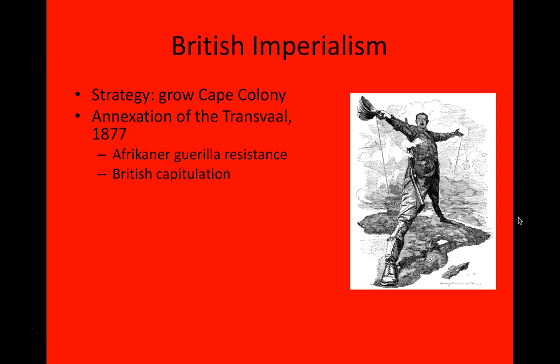They did annex it in 1877, but the resistance was much greater than Shepstone had anticipated. Within a couple of years there were disputes over taxation, and finally an armed uprising. The Afrikaners waged a guerrilla campaign against British positions, which became simply too much for the British to tolerate. They were not equipped or interested in fighting an all-out war at this point, and so they capitulated in 1881 and handed over self-government again to the Transvaal.